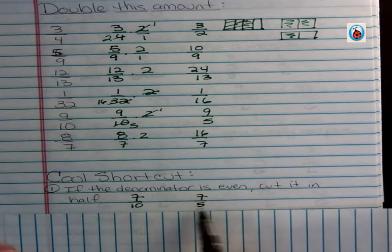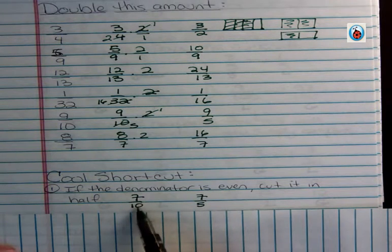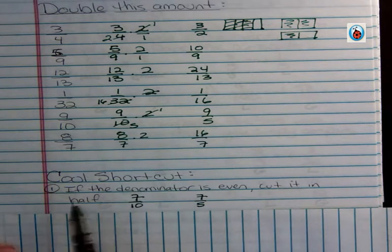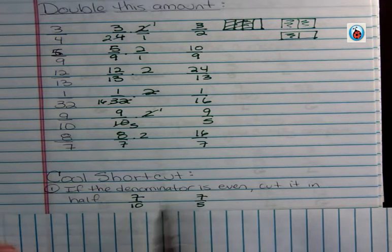So we actually have more than a full part now. Five fifths would be one, right? Before we were three parts short. So to double it, you cut the denominator in half.